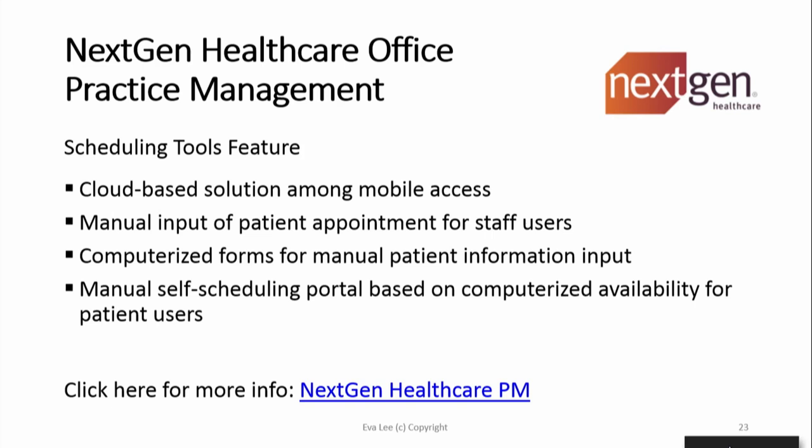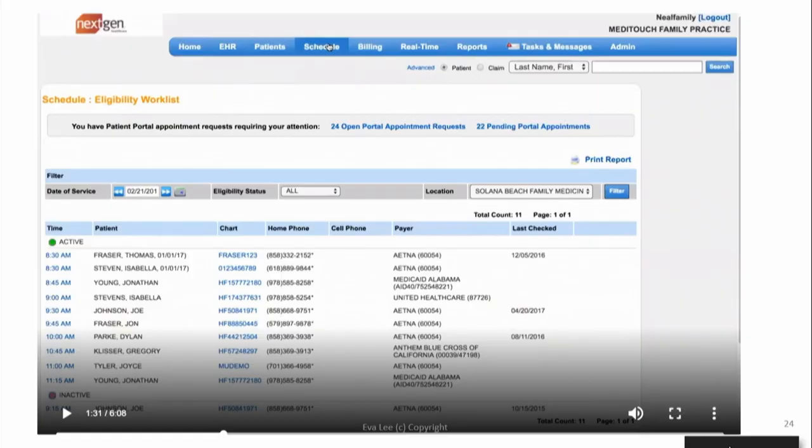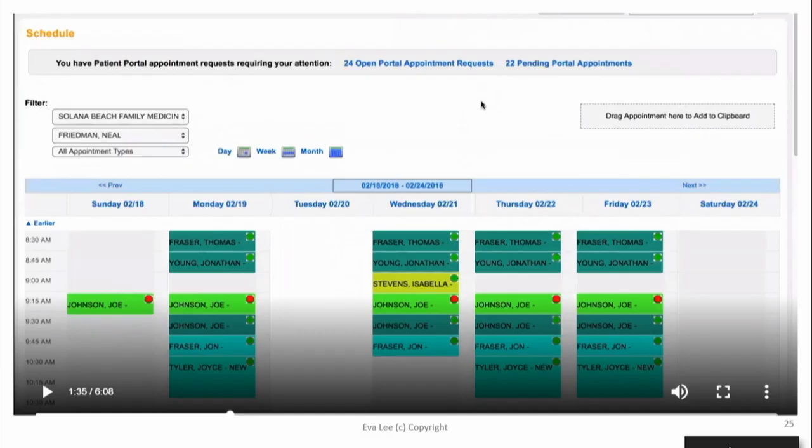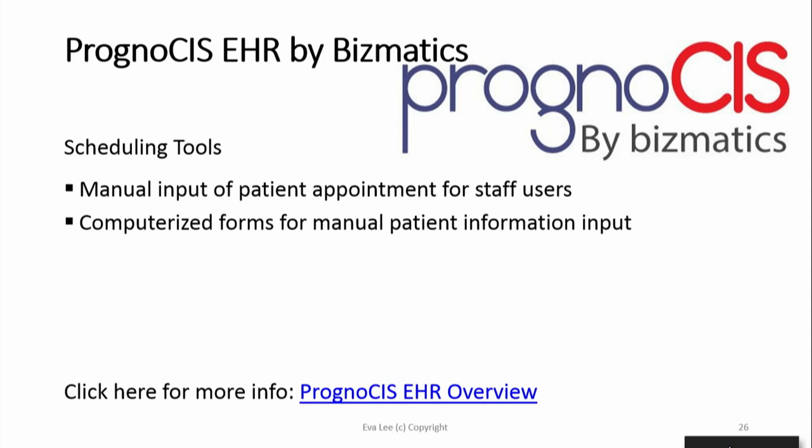This next-generation system is similar — manual and cloud-based. Very interesting is that it is a manual self-scheduling system, but the computer automates the process in one specific way: if you and I both log in at the same time and you grab a slot, I won't be able to grab that same spot. So it is automated in that sense, but otherwise it's fairly primitive.